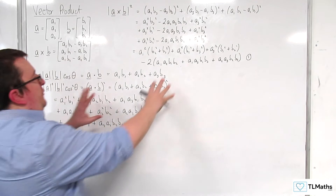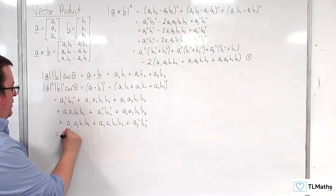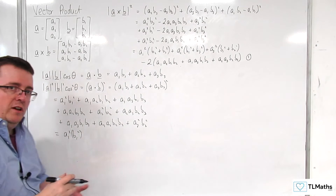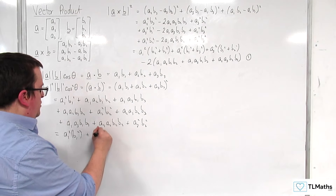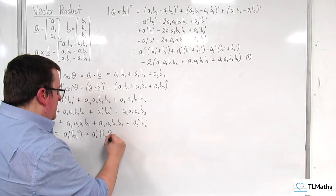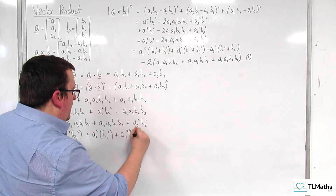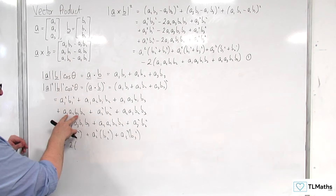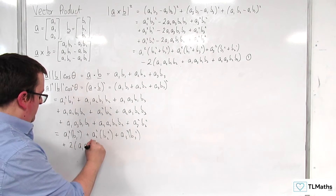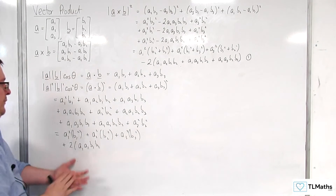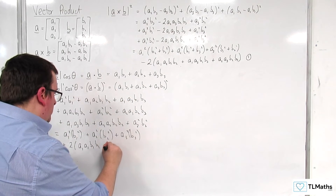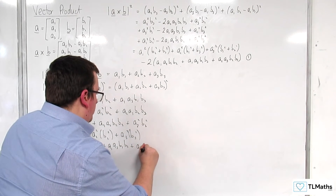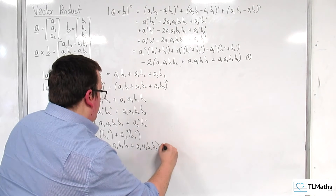I'm going to do a similar style setup to before. I have a₁²b₁², plus a₂²b₂², plus a₃²b₃². Then plus two lots of a₁a₂b₁b₂, because we have two of those; plus two lots of a₁a₃b₁b₃; and plus two lots of a₂a₃b₂b₃. This is equation number two.